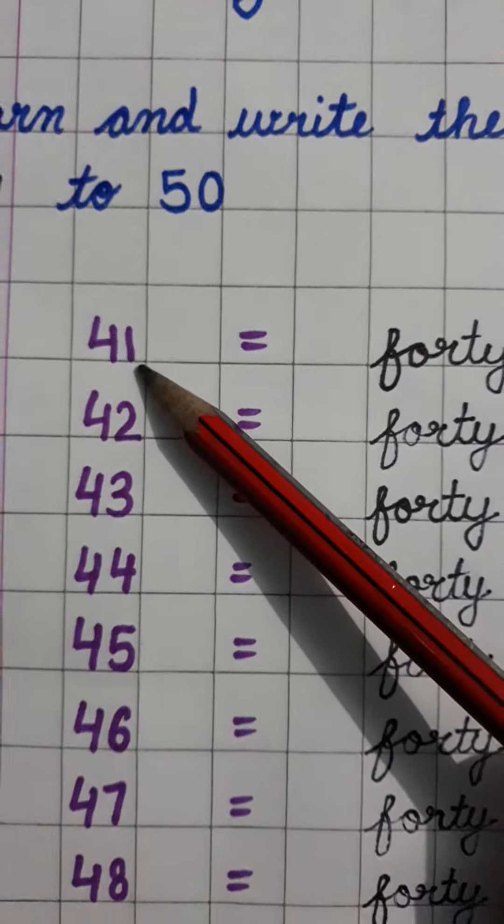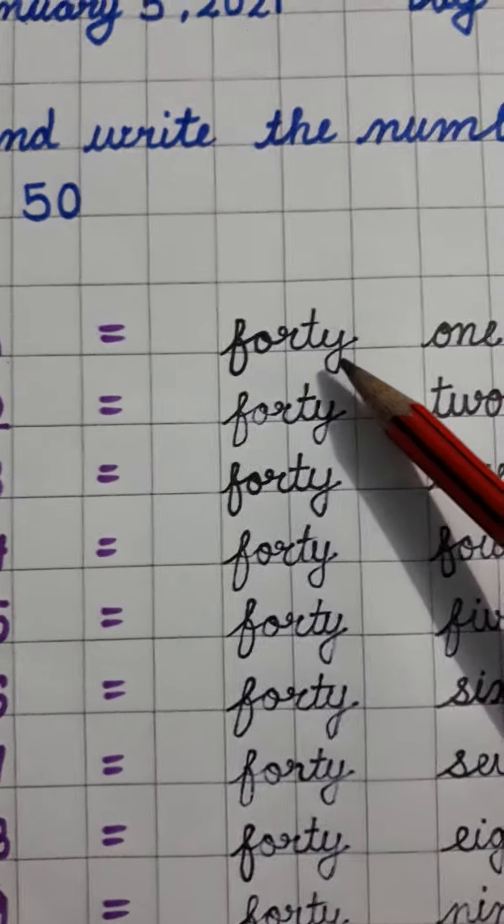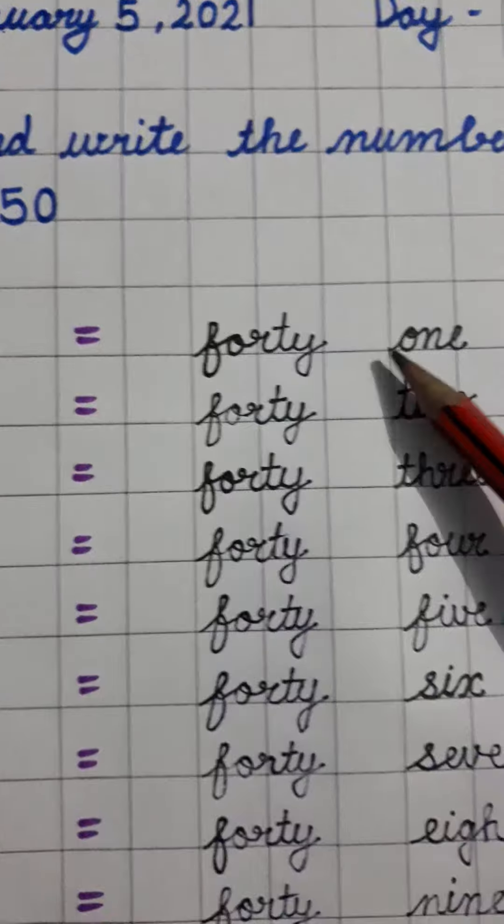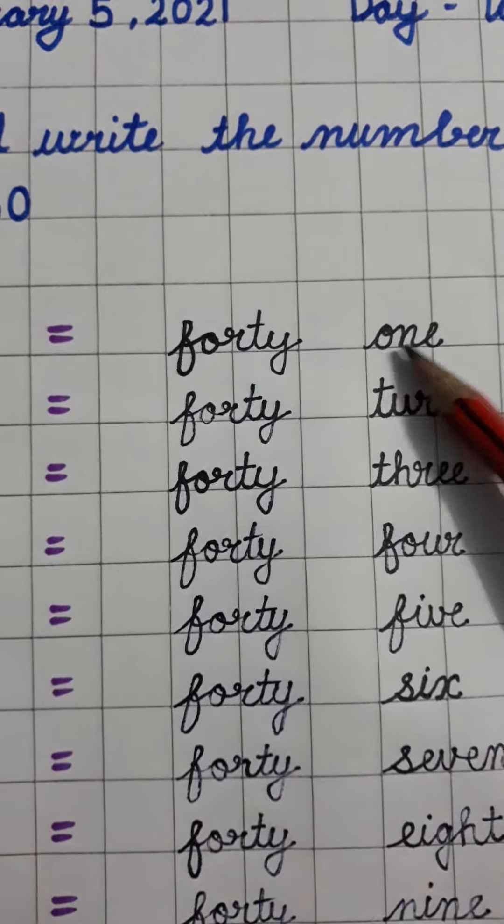41. The spelling of 41: F-O-R-T-Y, forty. Then leave one box, write O-N-E, one.